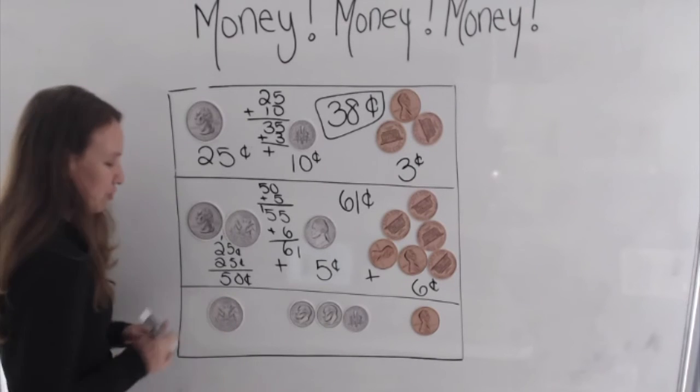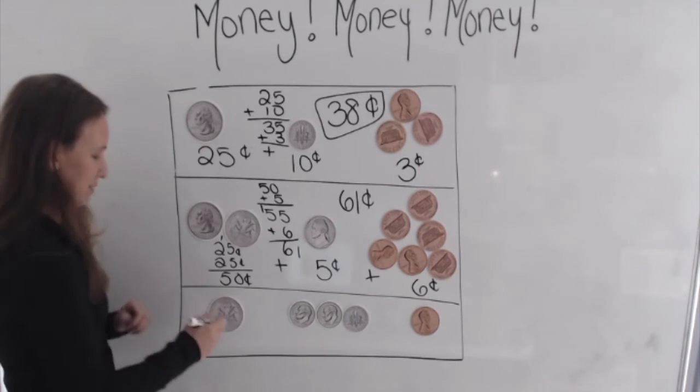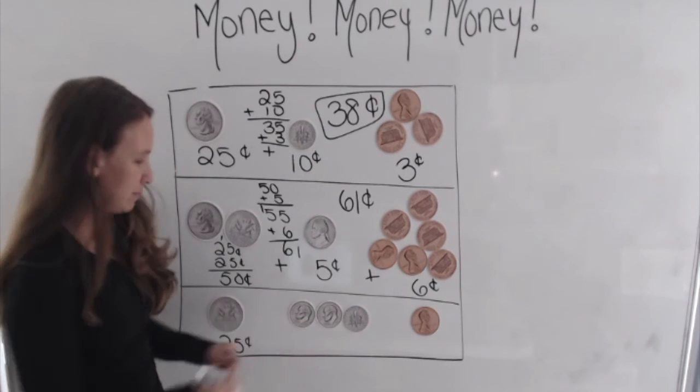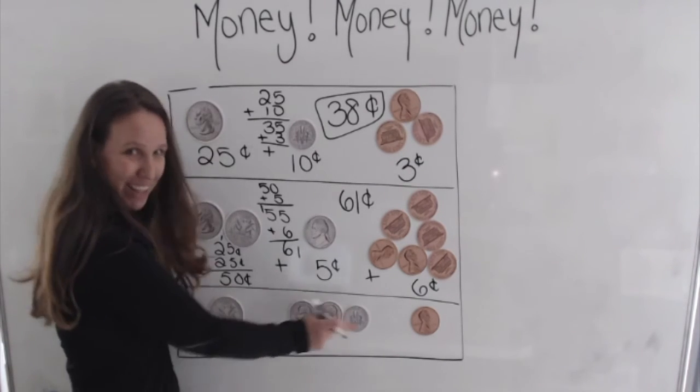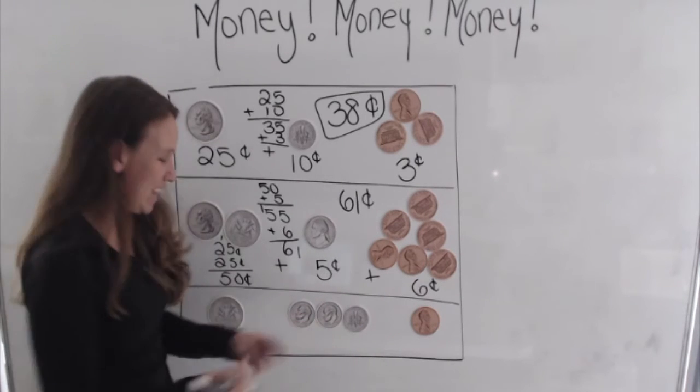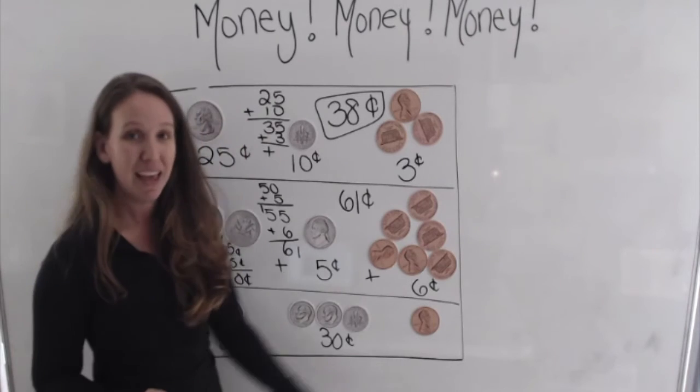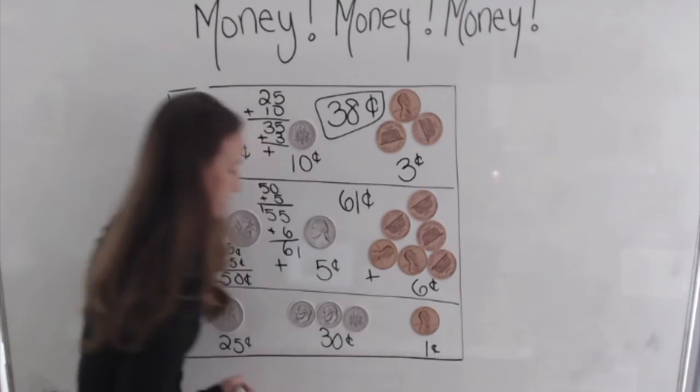So how much money do I have in quarters? That's right, 25 cents. And in dimes, 10, 20, 30, we can count by tens. So we have 30 cents in dimes. And we have one cent in pennies.